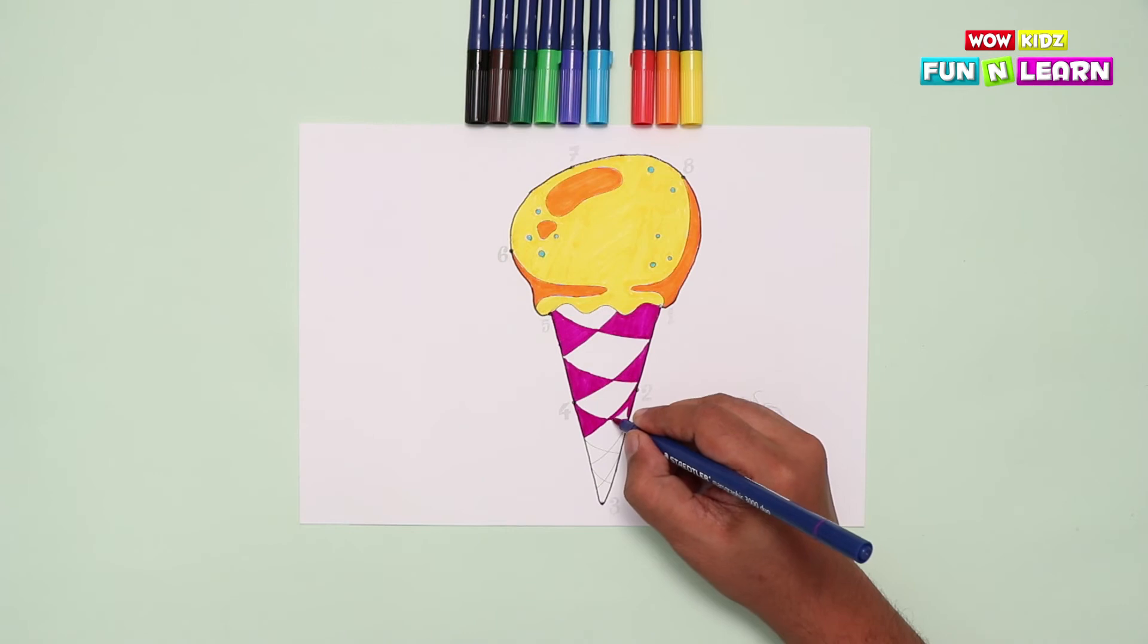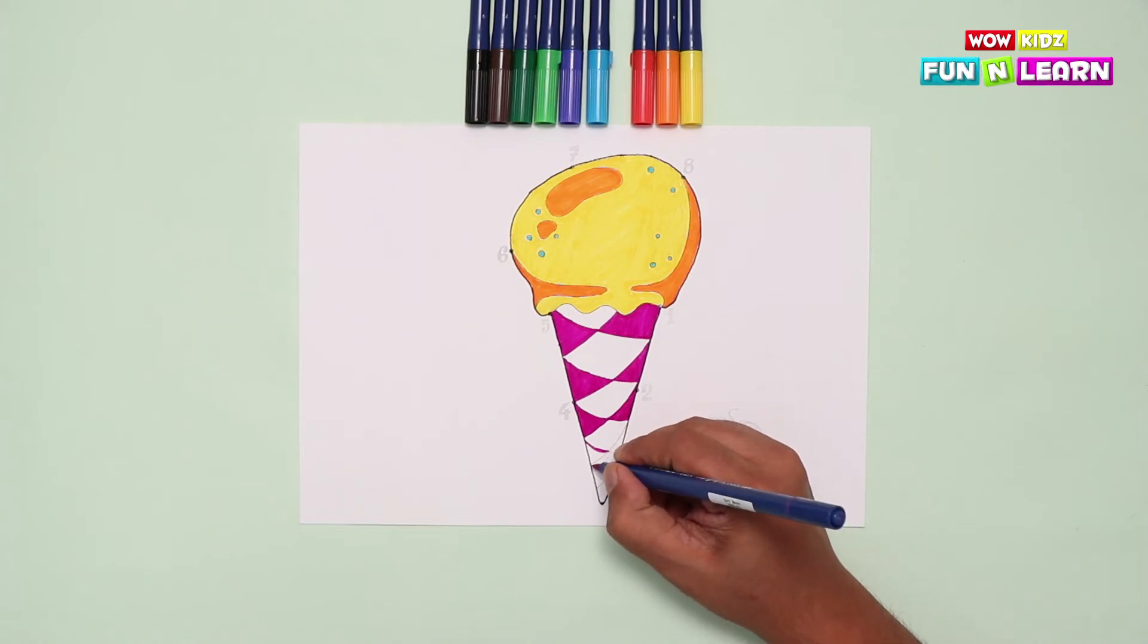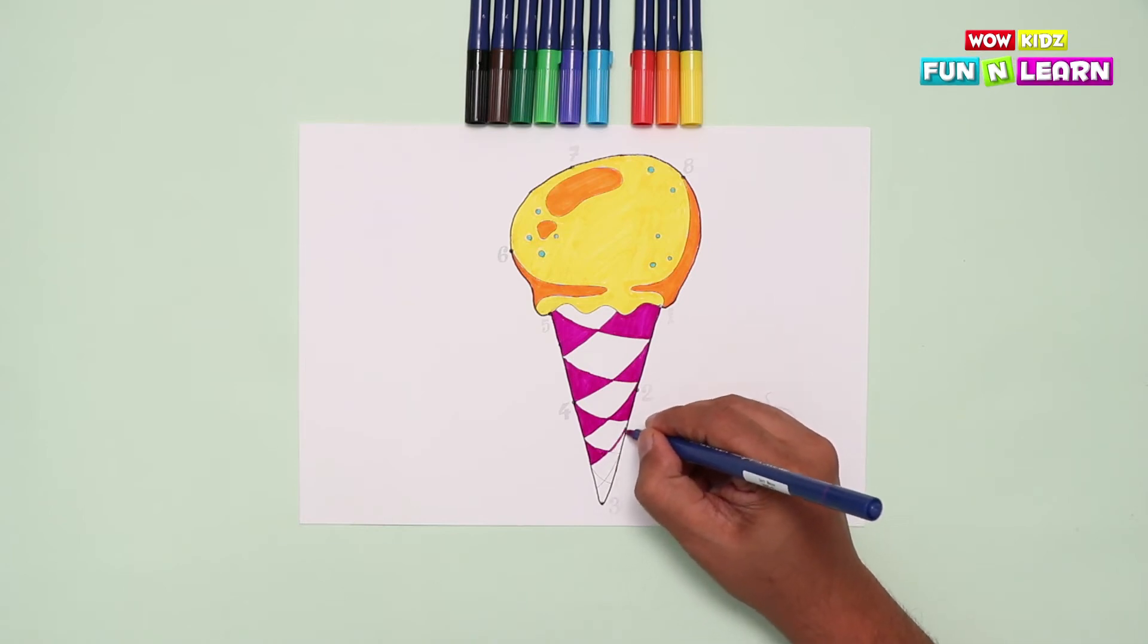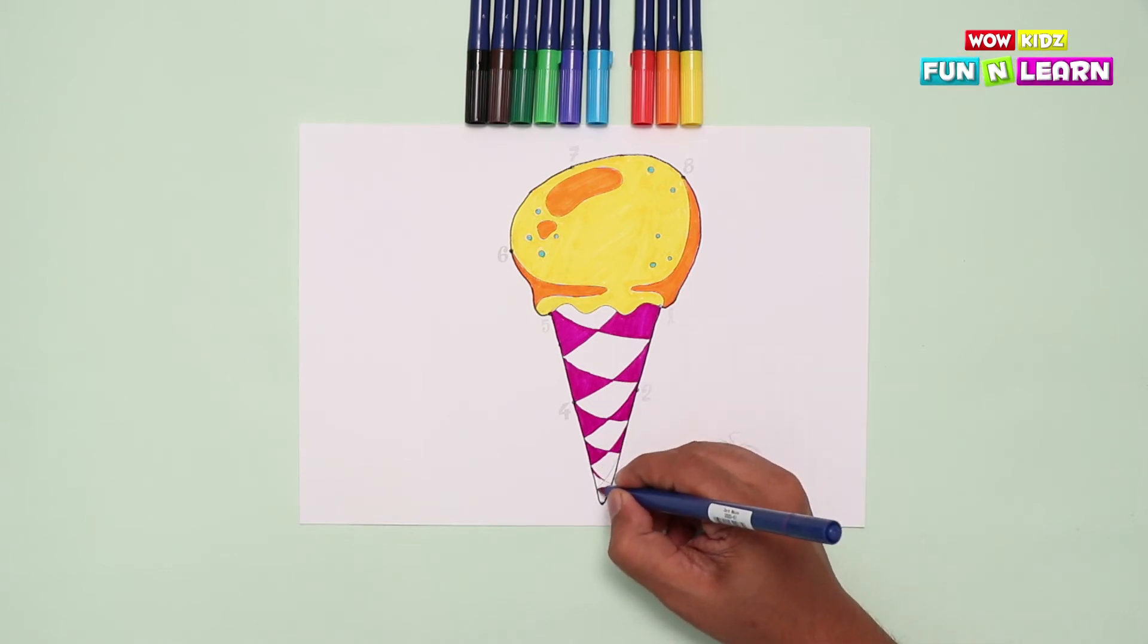Did you notice? As we go further down, the sections become smaller because of the shape of the cone. The cone itself gets smaller while we go down here. Yay!